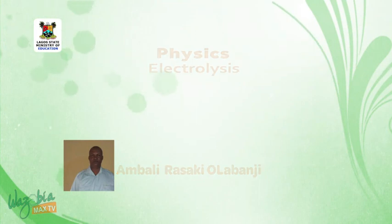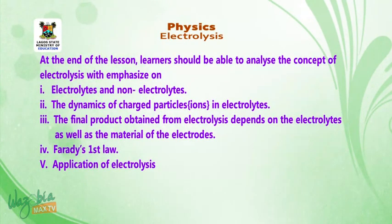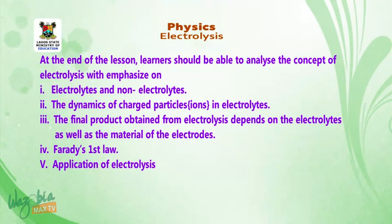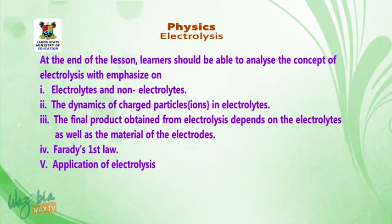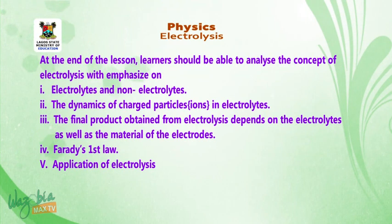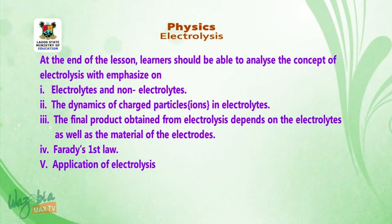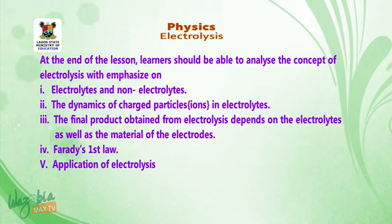Objective: At the end of the lesson, learners should be able to analyze the concept of electrolysis with emphasis on: 1. Electrolyte and non-electrolyte. 2. The dynamic of charged particles, ions, and ions in electrolyte. 3. The final product obtained from electrolysis depends on the electrolyte as well as the material of the electrode. 4. Faraday's first law. 5. Application of electrolysis.